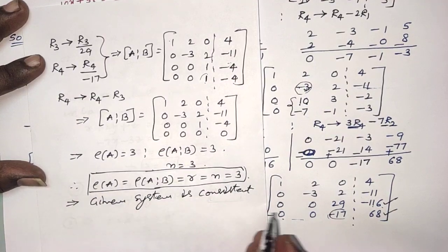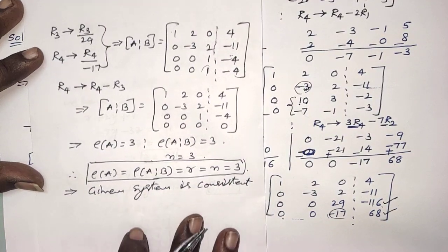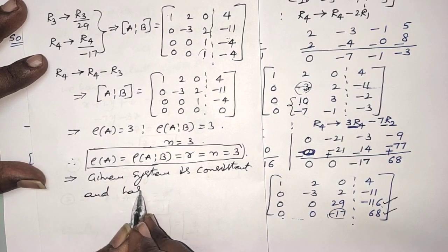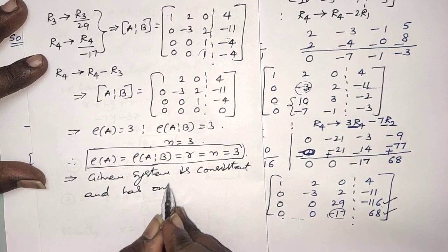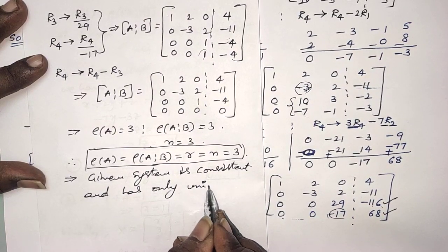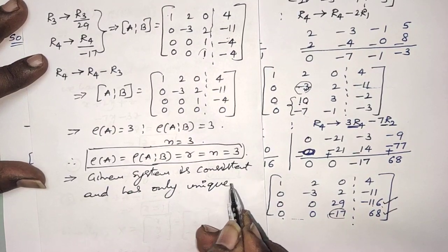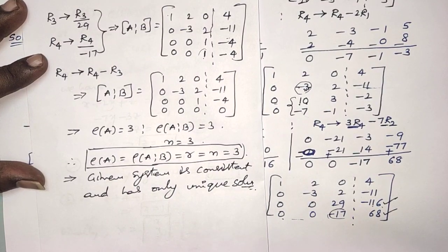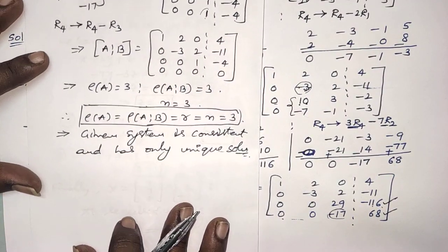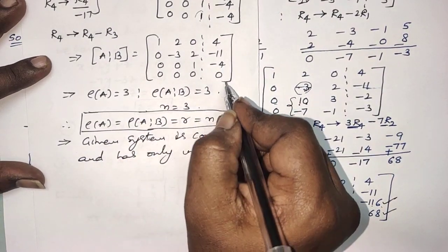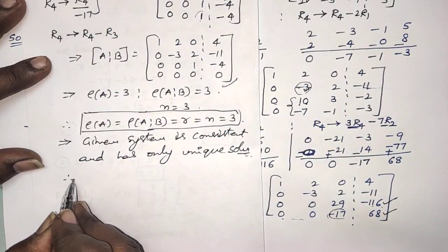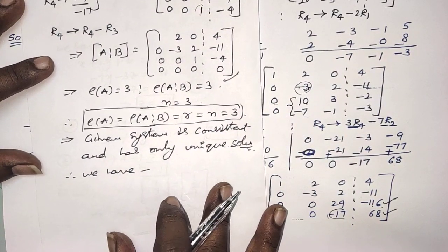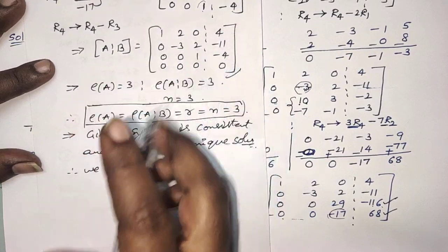So the given system is consistent and has only a unique solution. You should highlight this condition with a box in your examinations — don't forget it. Now we are going to find that unique solution. From the last matrix, we have to write the new equations.